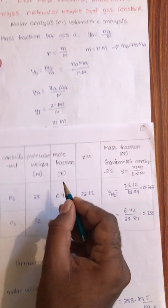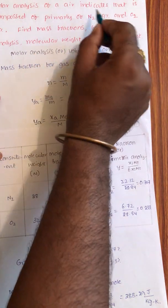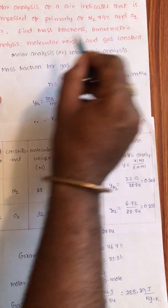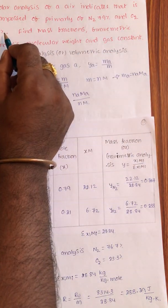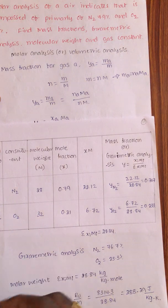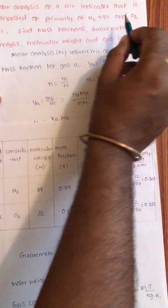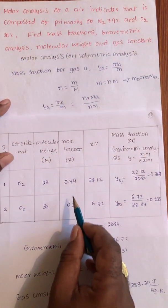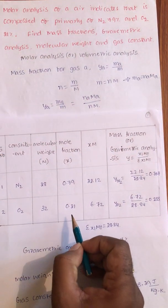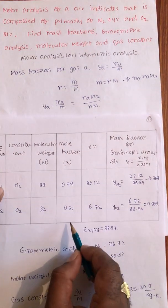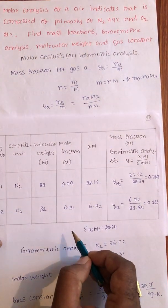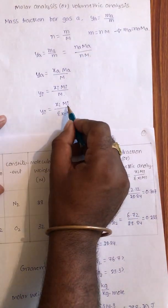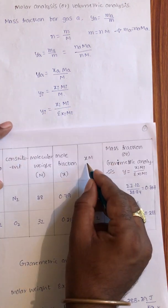Mole fractions X. He has given molar analysis as 79% nitrogen and 21% oxygen. Molar analysis means mole fractions. So X is equal to 0.79 for nitrogen and 0.21 for oxygen. Sum of all mole fractions must equal 1. Now I consider X into M.